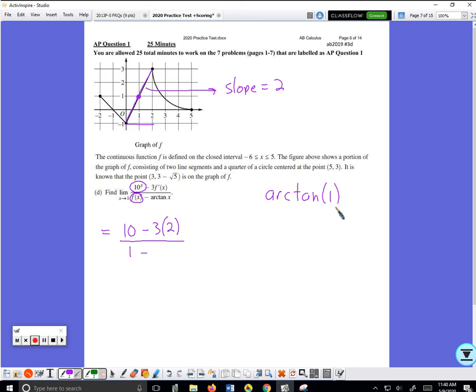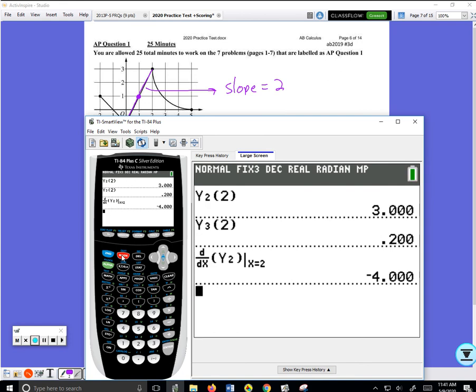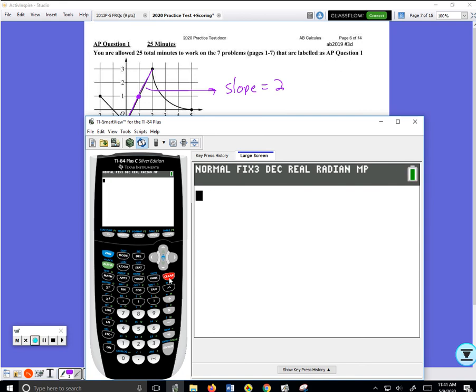You can actually do that on a calculator, see if I can get this to work in the video here. So I can go second, quit, clear. Arctangent means inverse tangent so I go second, inverse tangent, 1, enter.